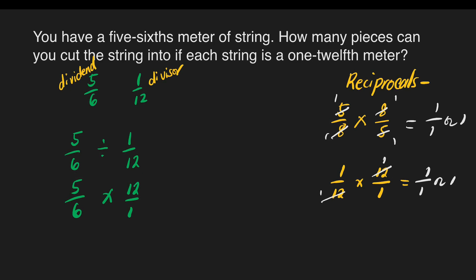We will just multiply. Is there something we can cancel? Yes — we can cancel 6 and 12. What number can we divide both? We can divide by 6. This becomes 1 and 12 divided by 6 is 2. So 5 times 2 is equal to 10, and 1 times 1 is 1, giving us 10. Therefore, there are 10 pieces of 1/12 meter we can cut from 5/6 meter of string.